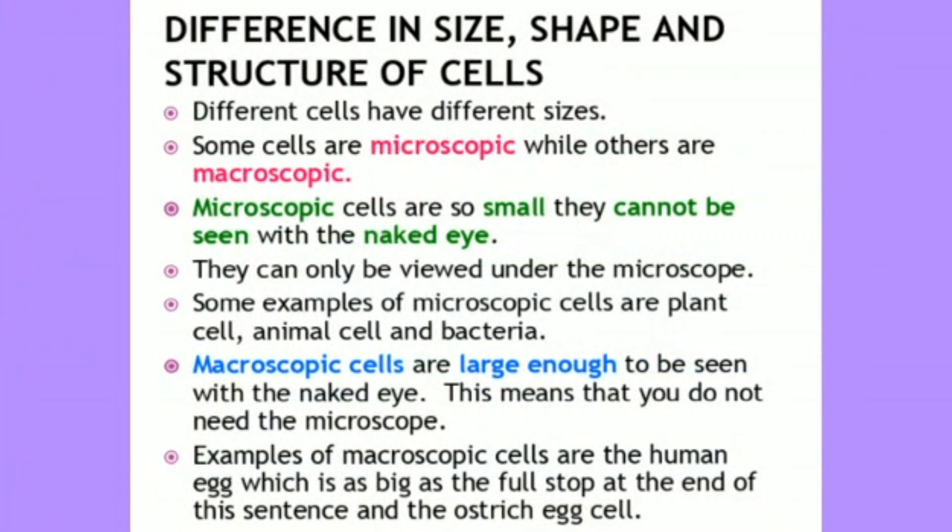Different cells have different sizes. Some cells are microscopic while others are macroscopic. Microscopic cells are so small they cannot be seen with the naked eye; they can only be viewed under the microscope. Examples of microscopic cells are plant cells, animal cells, and bacteria. Macroscopic cells are large enough to be seen with the naked eye, with no need of a microscope. Examples include the human egg and the hen's egg.